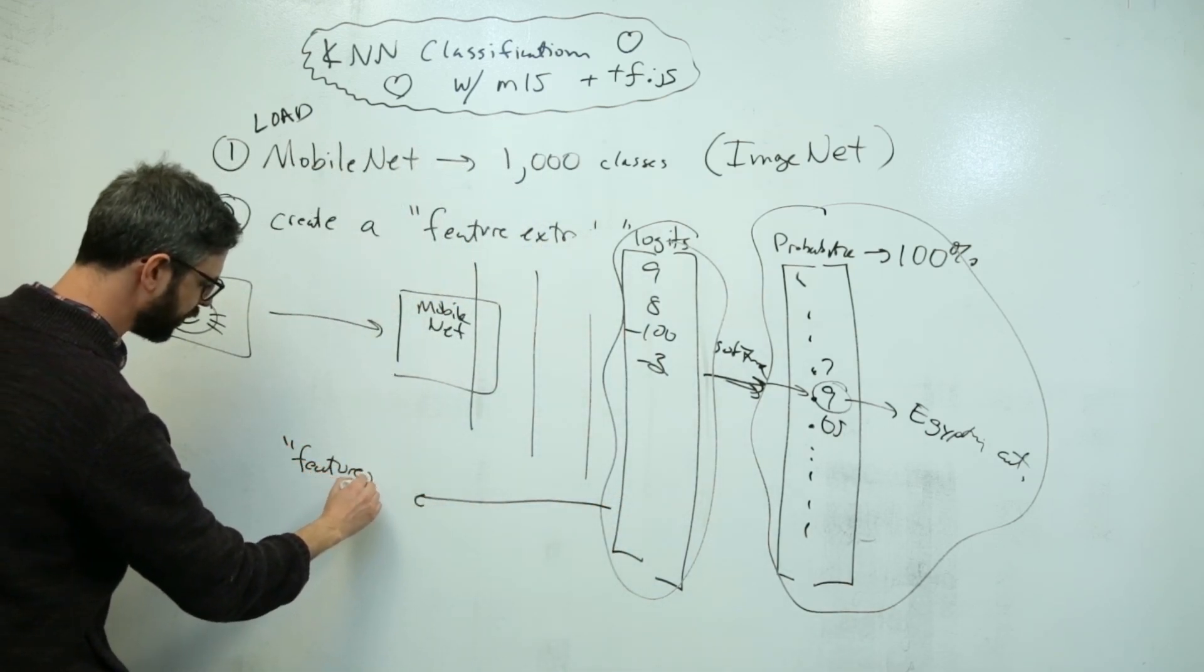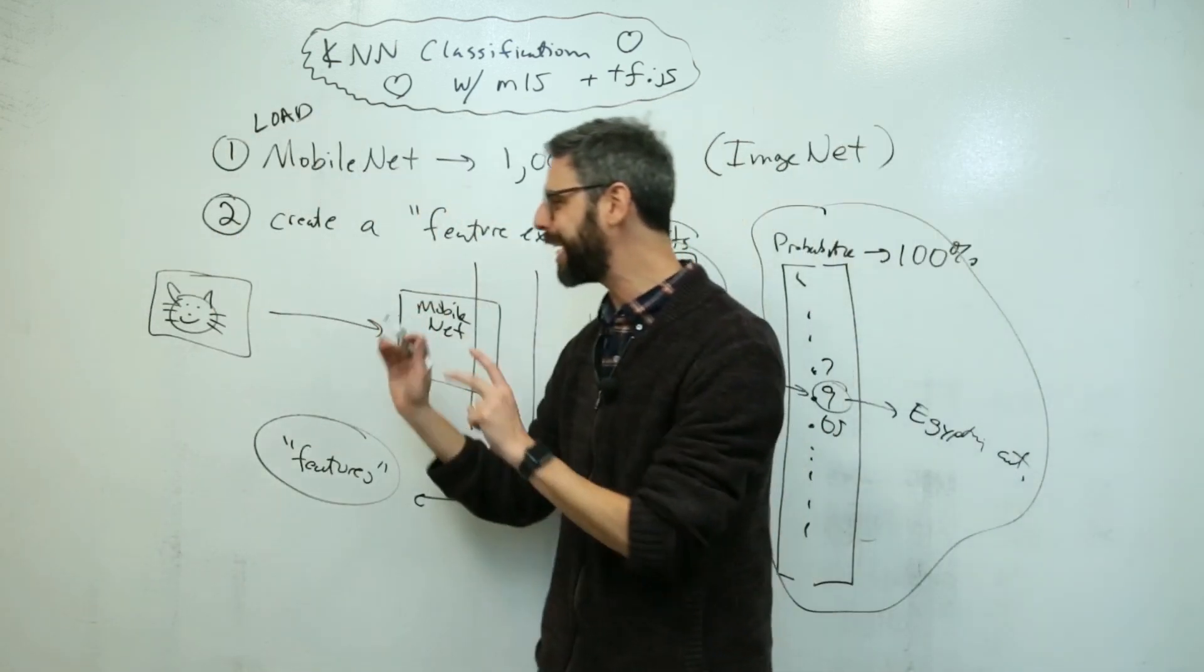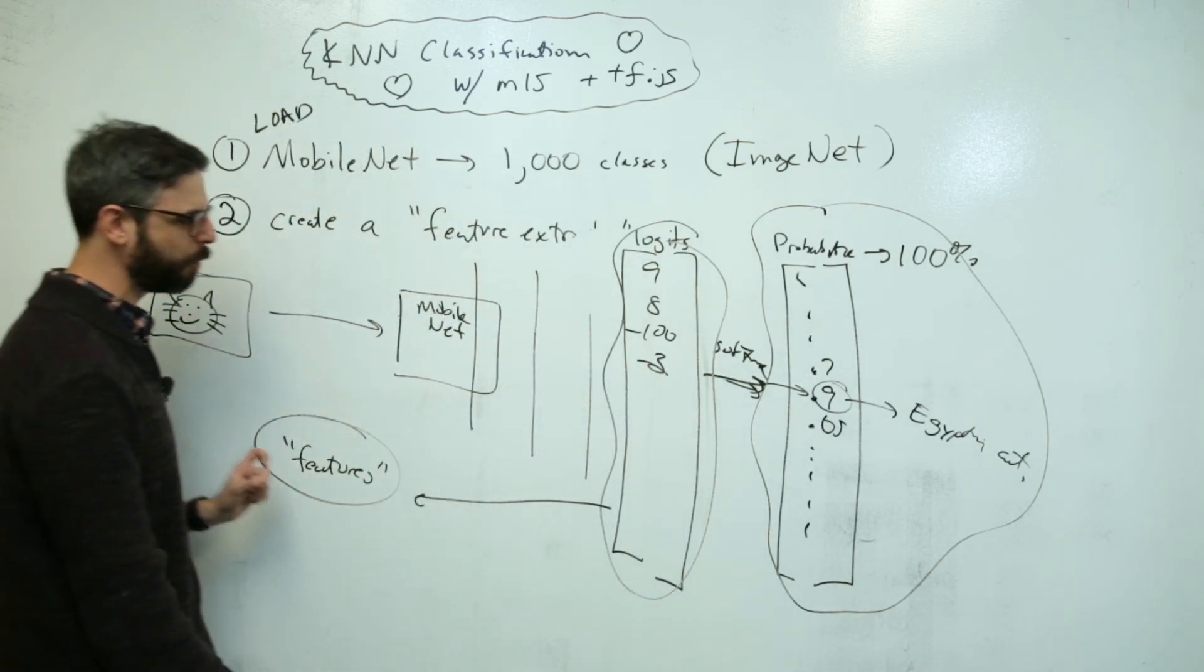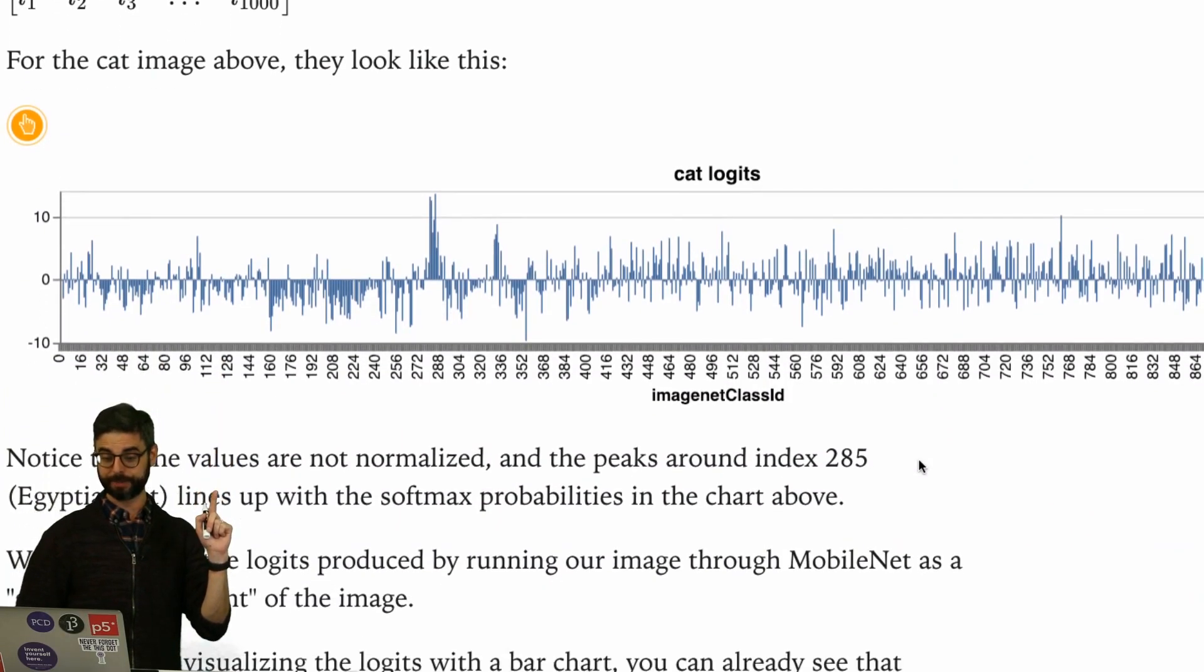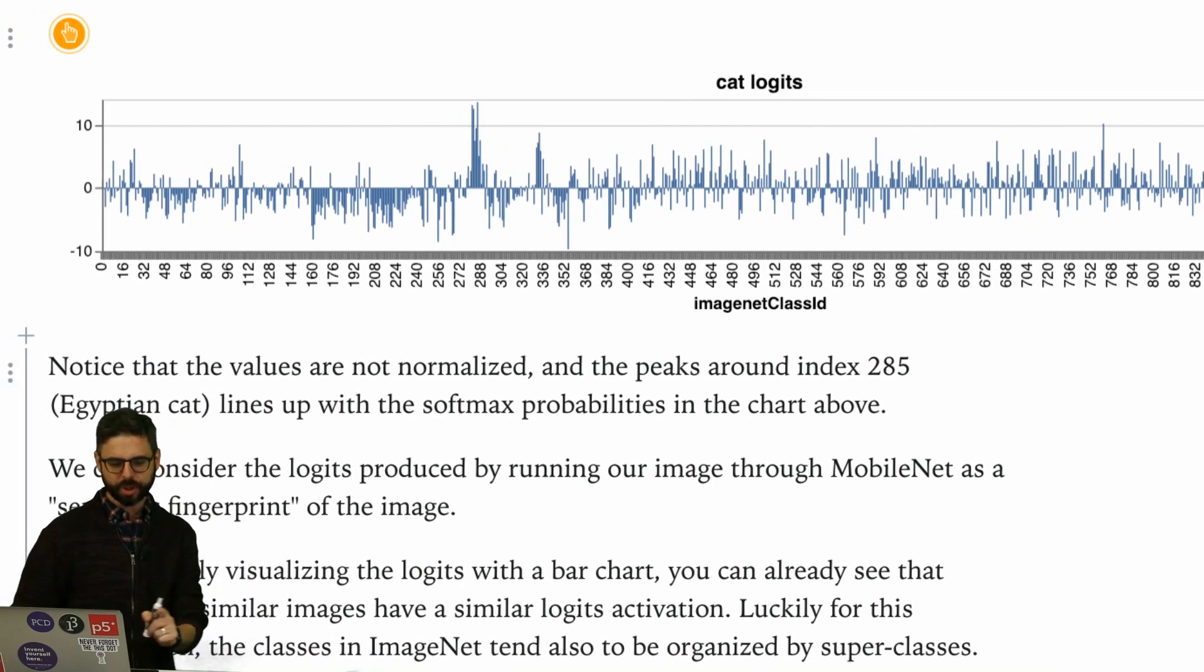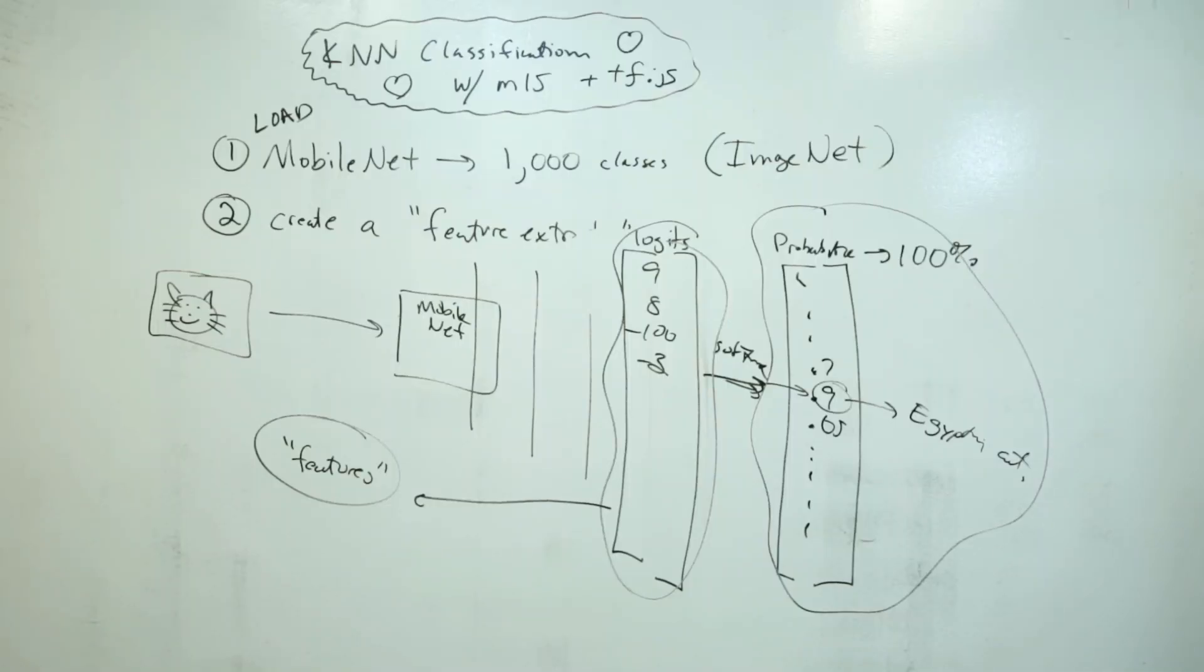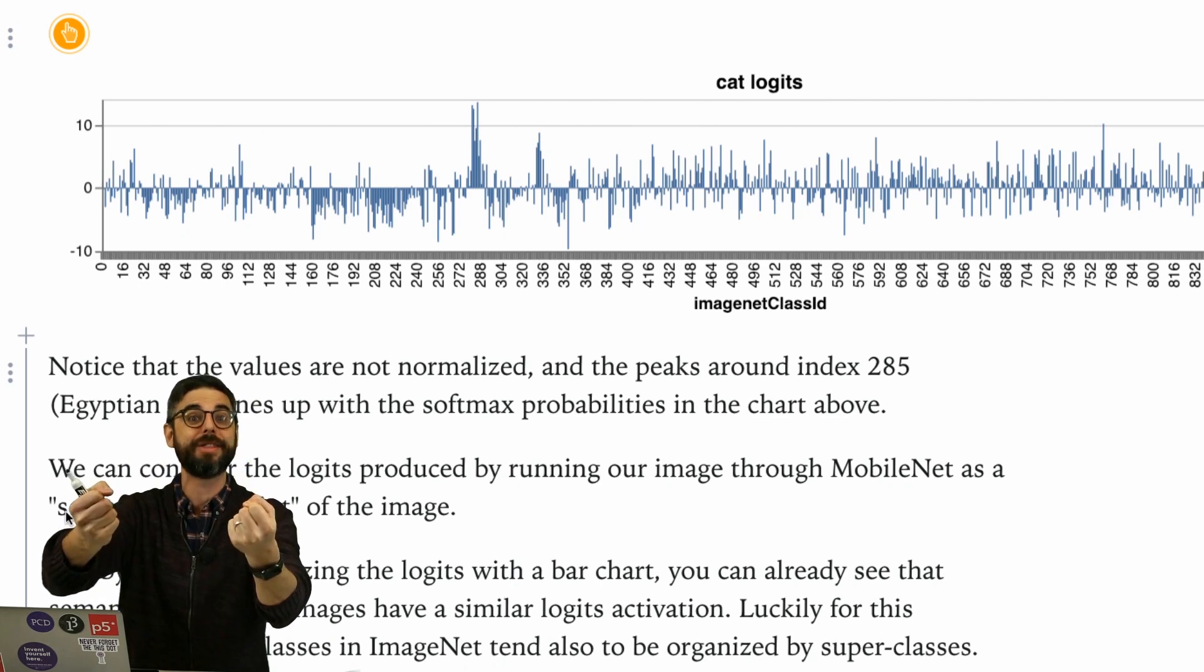This layer, all of these numbers, is referred to as the features. This is useful to give this another try. These are the cat logits. Nikhil writes, this is a semantic fingerprint of the image. It is the essence of the image, the boiled down numerical essence of the image as perceived by the MobileNet model.